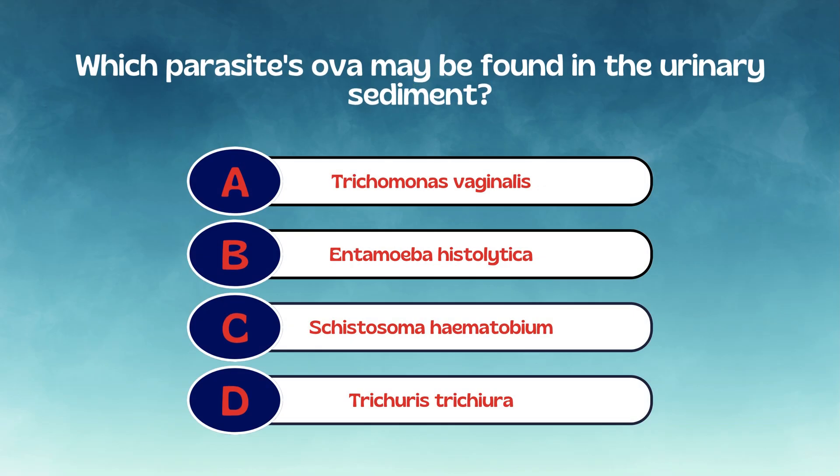Which parasite's OVA may be found in the urinary sediment? A. Trichomonas vaginalis. B. Entamoeba histolytica. C. Schistosoma hematobium. D. Trichuris trichiura.